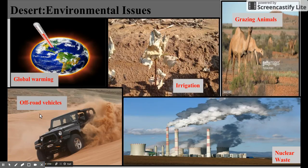Off-road vehicles and some of the things we like to do for fun can mess up the vegetation and home life for many of the organisms that live in the desert. So think about it before you get a dune buggy and go out on the deserts of Nevada, Arizona, and Utah.